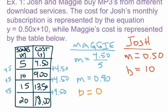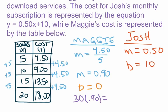For Maggie, who pays 90 cents per song with no monthly subscription fee, to find the total for 30 songs we multiply 30 times 0.90. That gives us a total of $27. So Maggie would pay $27 if she downloaded 30 songs at 90 cents apiece.